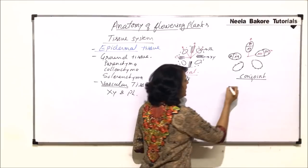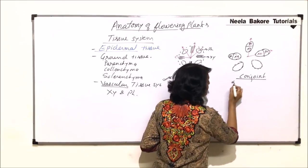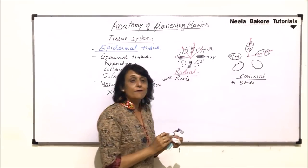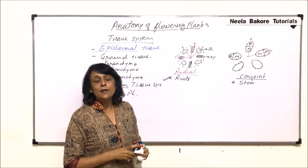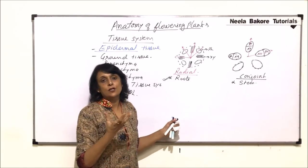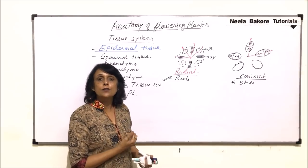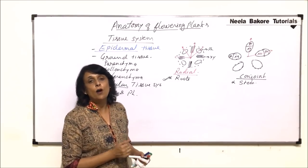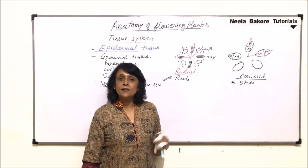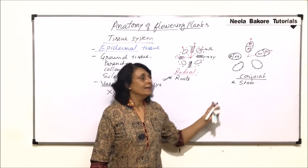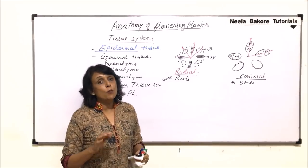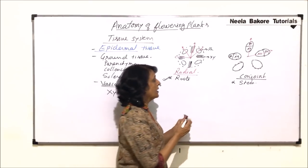Conjoint arrangement is the characteristic feature of stem. So if we find xylem and phloem at different radii — radial arrangement — then the structure has to be a root. And if we find conjoint bundles, then that structure is a stem — it could be monocot or dicot stem.